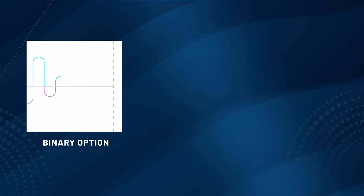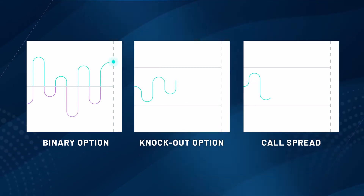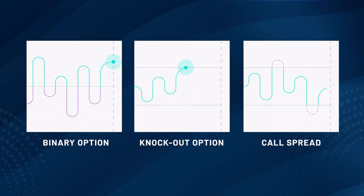And then finally, it's choosing one of the three products that we have at Nadex to trade that respective market. It could be one of our binary options, it could be our knockout option, or it could be our call spreads. All three of those have distinct advantages, and we talk a lot about those three products in our learning center in very short videos and short write-ups.